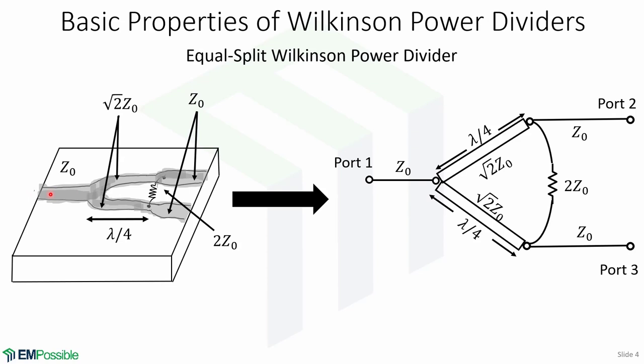This is an image of an equal split Wilkinson power divider in which the power flowing into port 1 will be equally split into ports 2 and 3. Note that the ports are also connected by a junction of transmission line of length lambda over 4 and with impedance of square root of 2 Z-naught. And finally, there is a parallel resistor between ports 2 and 3 with value 2 Z-naught. The equivalent transmission line circuit is shown here.